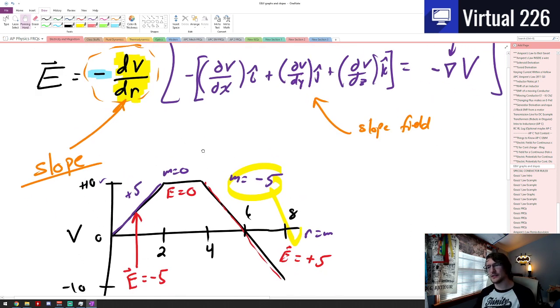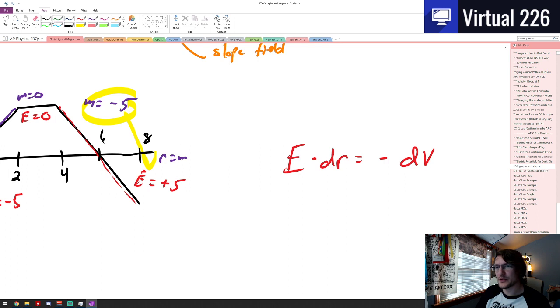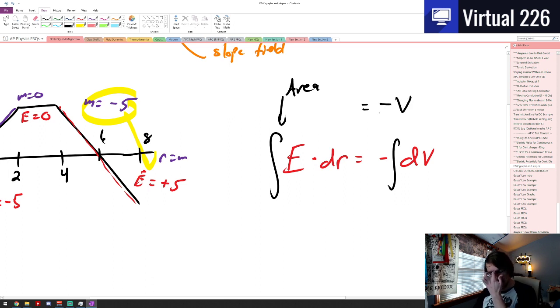What this equation also tells us is, if we rewrite it in a slightly different way, if we say that the electric field, and I'm going to bring the dr term over, this would equal negative dv. Which means that if I integrated both sides, integrals give me areas. And this is just fancy addition for saying negative voltage.